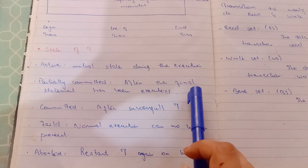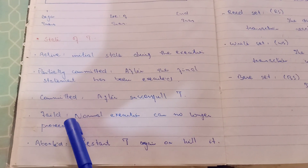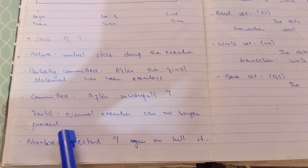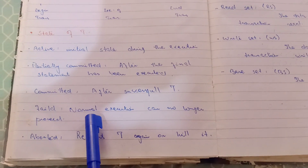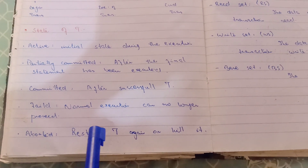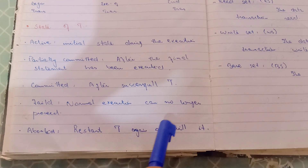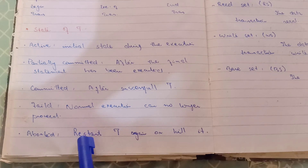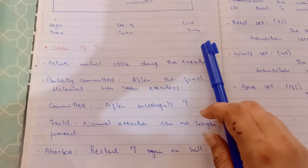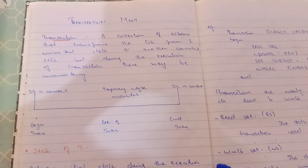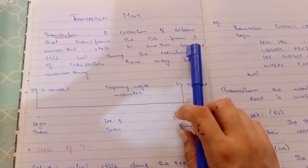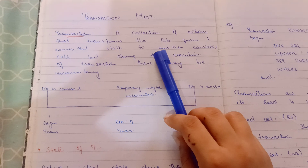Committed means after a successful transaction — your transaction is completed or successful and has ended; you name it committed. Failed means normal execution can no longer proceed — your execution can't be processed and your transaction has failed. Aborted means the transaction will restart or be killed — your transaction will restart.